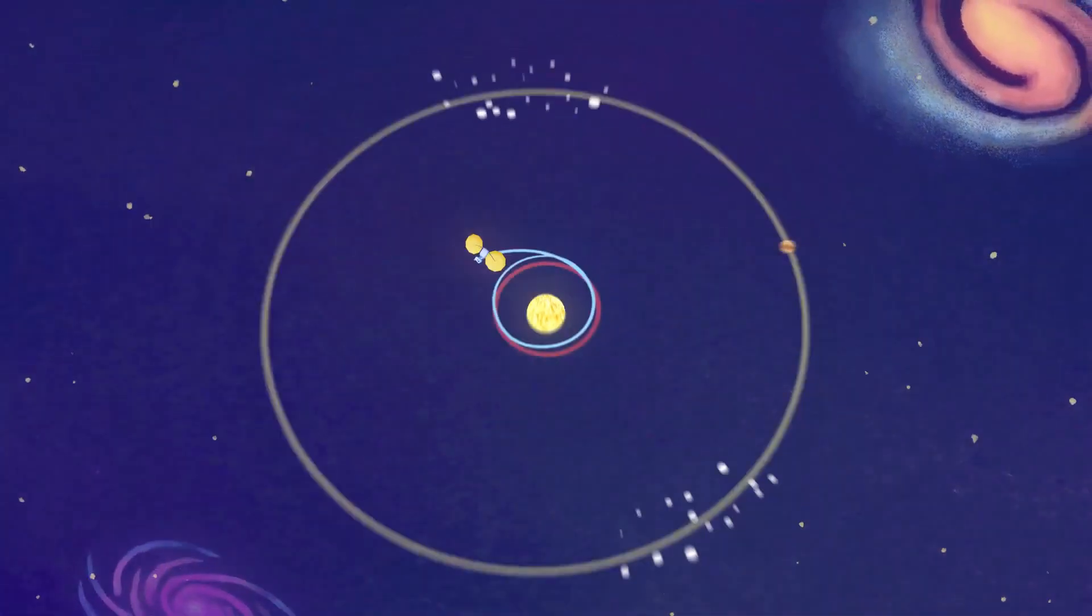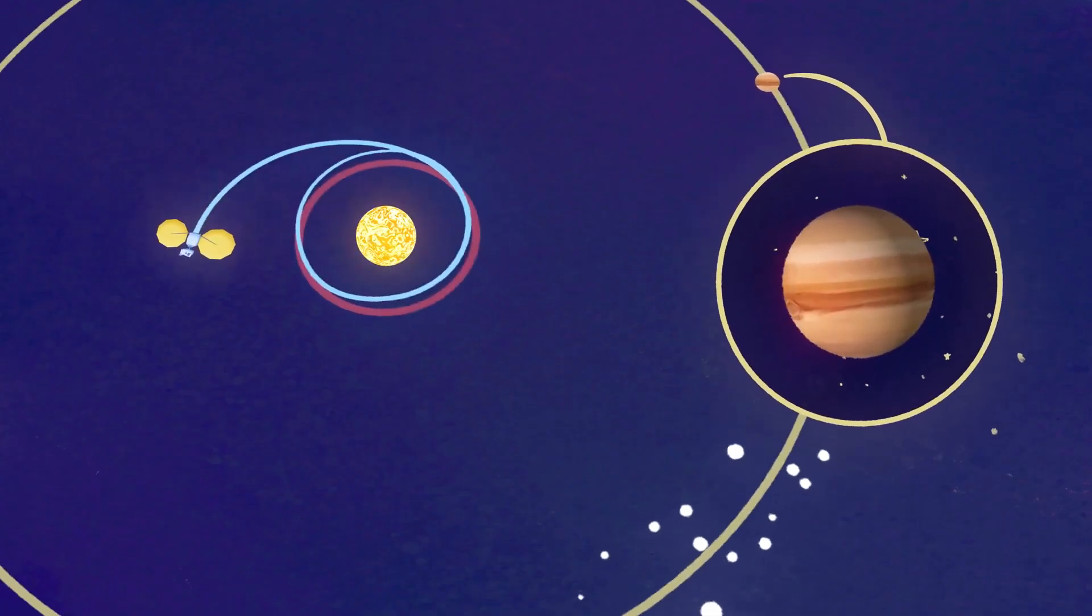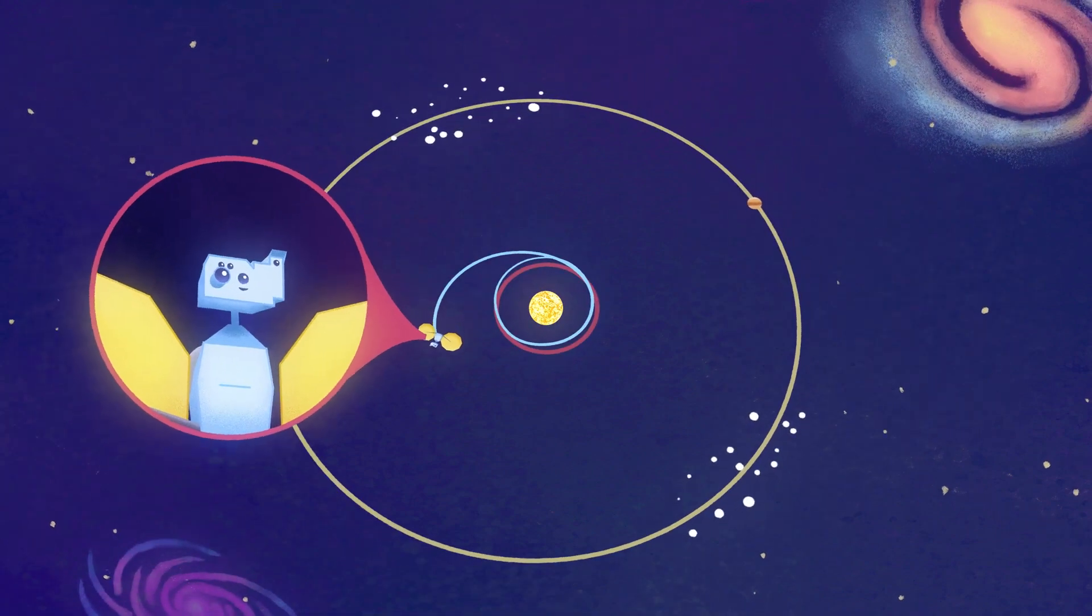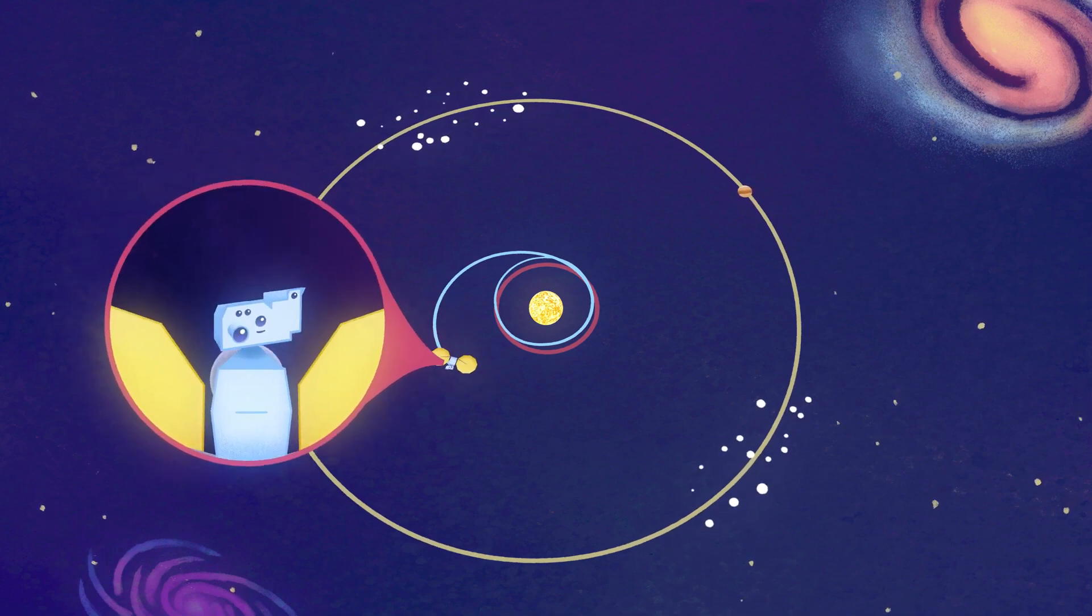The Trojan asteroids are small bodies in our solar system. They share an orbit with Jupiter. There's two swarms of them. One located 60 degrees ahead of Jupiter in its orbit, and the other swarm is located 60 degrees behind Jupiter in its orbit.